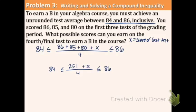And now, in order to get the X by itself, we need to multiply everything by four. Multiply this by four, and the other number by four. Now the fours in the middle cancel out. That's very good. Four times 84 is 336. And then 251 plus X. And then 86 times 4 is 344.